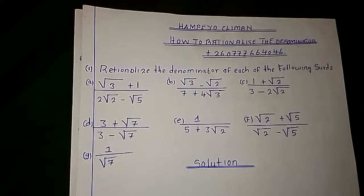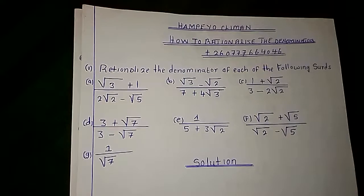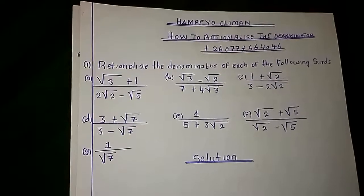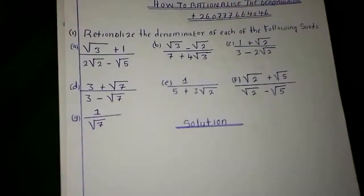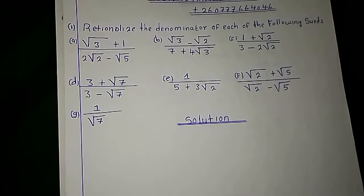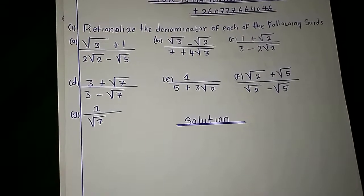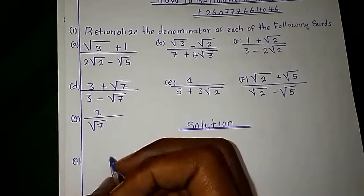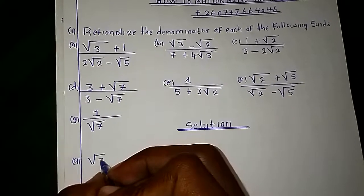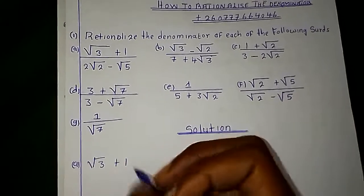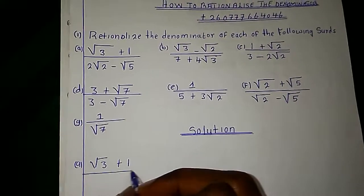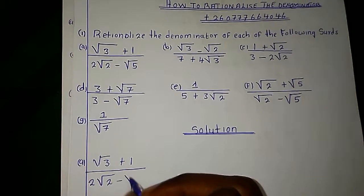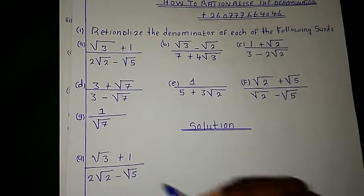We have been given root of 3 plus 1 over 2 root 2 minus 5. How do you do this question? The best way to go about this is by using what we call the conjugate of the denominator. So we have root of 3 plus 1 over 2 root 2 minus 5.